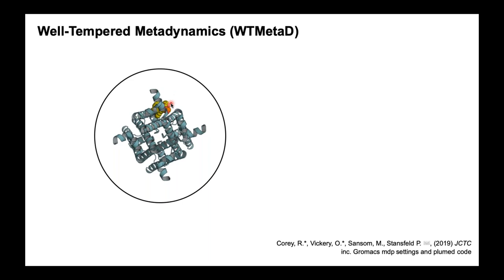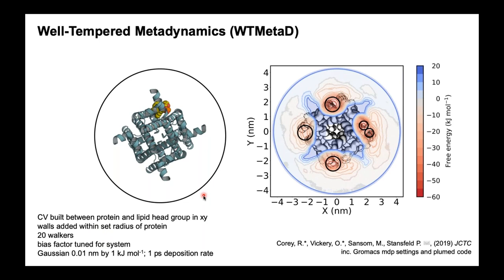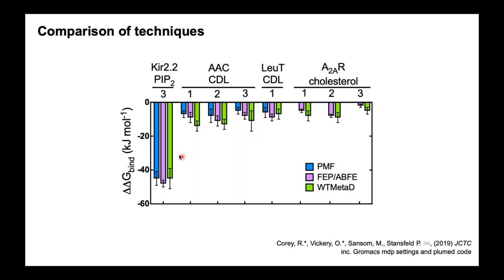Finally, well-tempered metadynamics involves applying Gaussians of energy to the lipid so that it never stays in the same place too long. The more Gaussians you have to apply, the higher the affinity for that particular site. You can then use the amount of Gaussians applied to reconstruct a 2D landscape of your lipid around the protein. This is more costly computationally, but you get a much more complete view of the protein-lipid landscape without needing to know the actual site before running the free energy calculation. We ran these for a number of protein-lipid systems and get fairly good agreement between the different methods for our free energies of binding, and crucially a similar ranking for different sites.